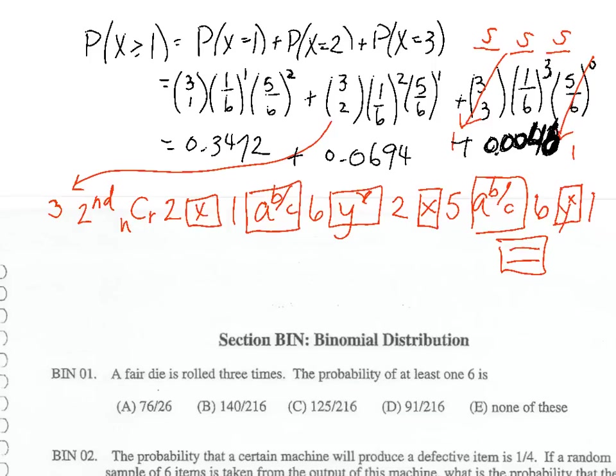Putting these all together, your final answer is 0.4212. So the chance of at least one six in three rolls of a die is 42.12%.